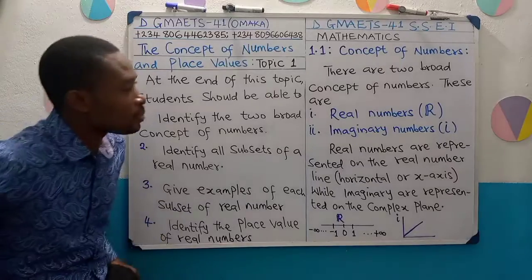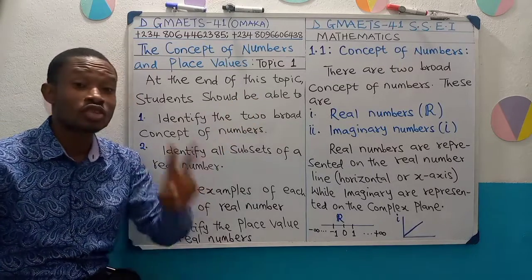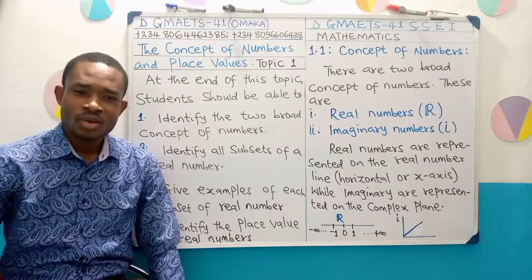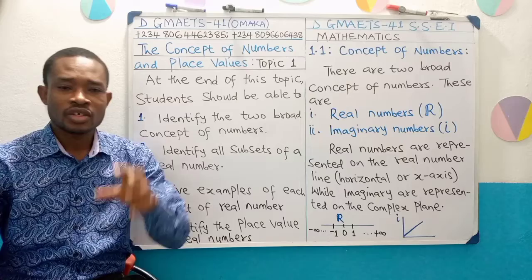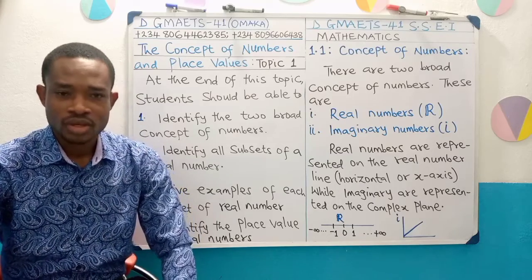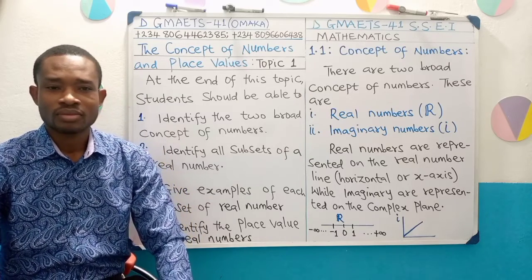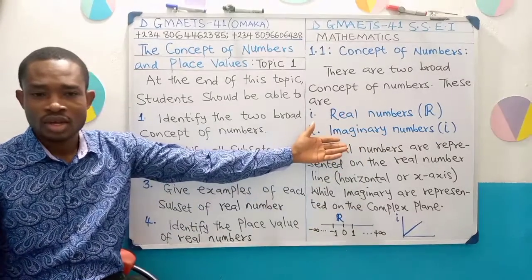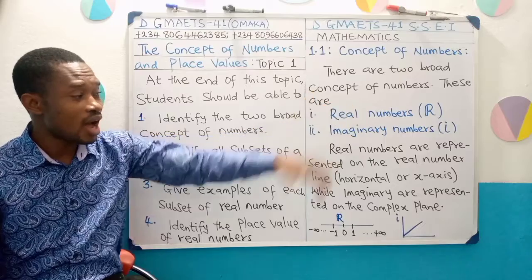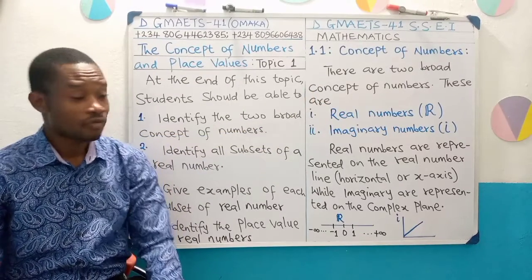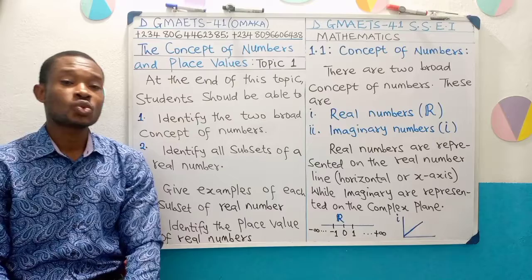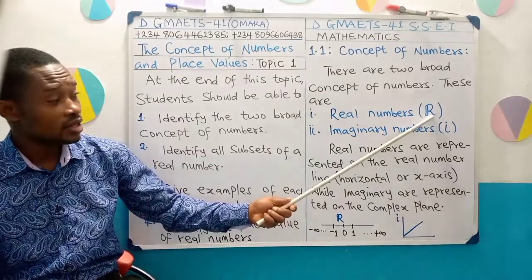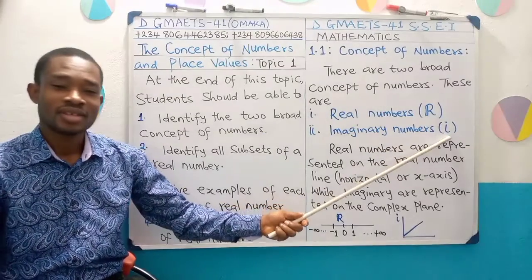On the board we have the concept of numbers, and it may interest you to know that there are two broad concepts of numbers. One type is real numbers, represented by R. And of course we also have imaginary numbers, represented by I. You can see both symbols on the board.